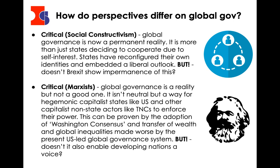Social constructivists would argue global governance is a really good thing. As states become more interdependent, they become more like each other through building a community and change their own identities. If you look at the European Union and how nations have changed their identity via global governance and rules — though Brexit kind of blows that theory out of the water, because it shows states can decide not to want to share an identity. Marxists would argue that global governance is basically set up by hegemonic capitalist states like the USA in order to enforce their power on the working classes of the world and transfer wealth from the developing world to the developed world.